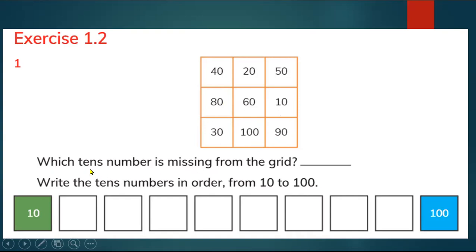Let's read the question. Which tens number is missing from the grid? Now look at the grid. Which tens number is missing? So first of all you know what are the tens? The tens have zero in the ones and tens will change.